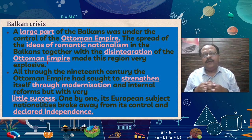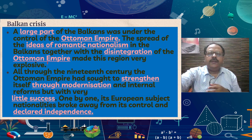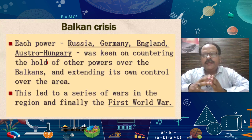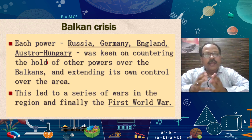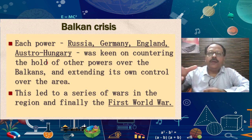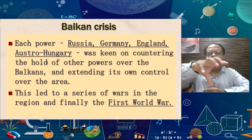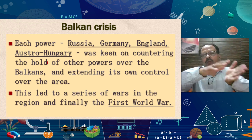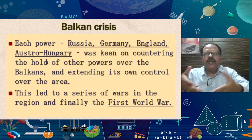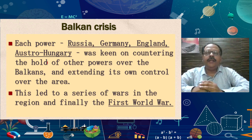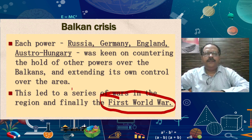Students, here we have seen the Balkan Crisis. The Balkans is the region near the Black Sea, where the Ottoman Empire was declining. Most of the European countries wanted to establish their own influence over these countries, and it ultimately resulted in the First World War.